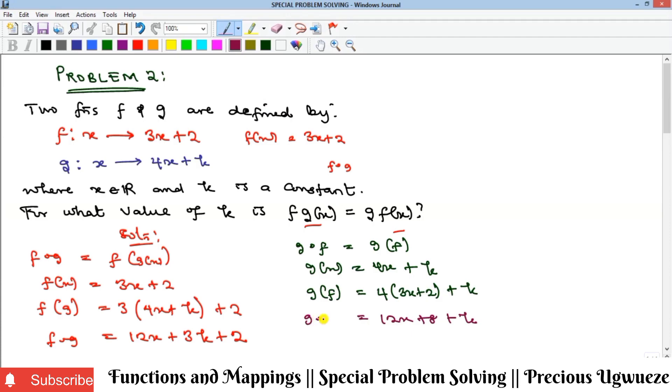Now to get the value of k for which the two of them will be equal, all we need to do is equate the two. If we equate f∘g to g∘f, we have 12x + 3k + 2 must equal 12x + 8 + k.